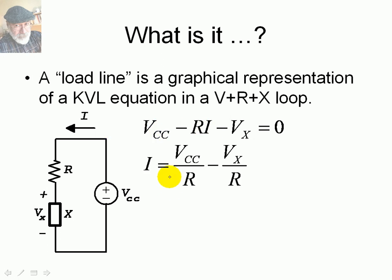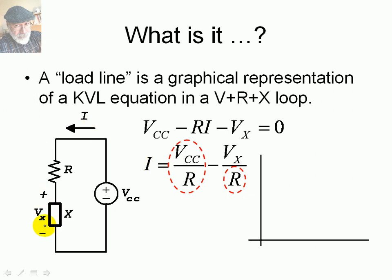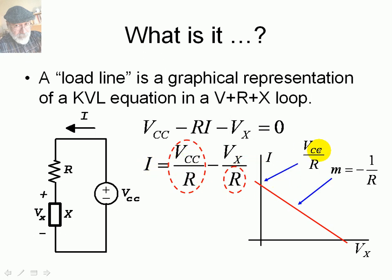We can solve for the current in the loop. Vcc and R are the values of the source and the resistor, both known. If we plot that current versus Vx, this is a line with a negative slope. It intersects the horizontal axis at Vcc (when I is zero) and the vertical axis at Vcc over R (when Vx is zero). The slope is negative 1 over R — the inverse of the resistance external to element X. We call that the load line of the circuit.